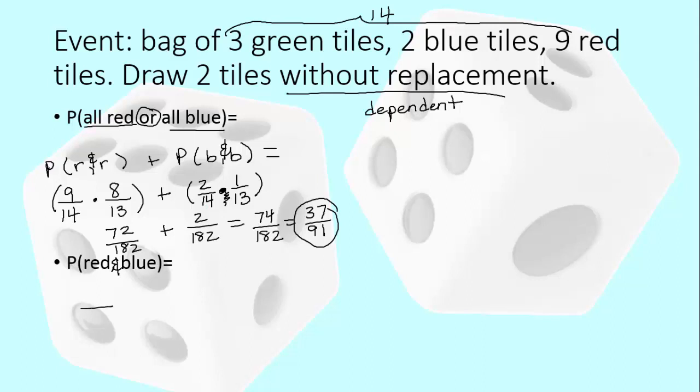And that is 9 out of 14 possibilities. Then we multiply because they both have to be true. One tile is missing and it's a red tile. All the blue tiles are still there. So we have two blue tiles to choose from, but not all the tiles are there. So there's 13 in the bag. And then that is 18 out of 182 possibilities, which can reduce to 9 out of 91. And that does not reduce. So we are done.